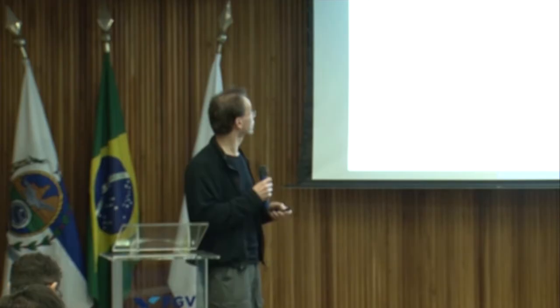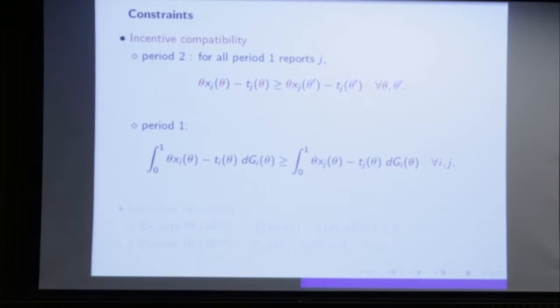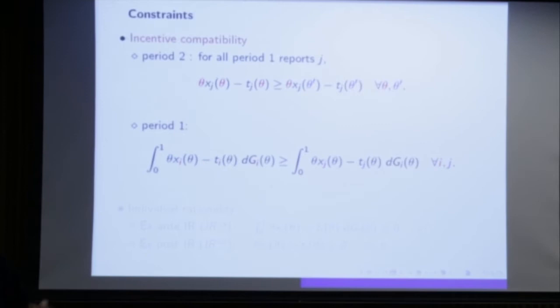Regarding incentive compatibility: the period-two constraints are standard — given that I already reported some type J, I will report theta truthfully. For period-one incentive compatibility about type I, given the non-shifting support, we also have truth-telling off the equilibrium path. The incentive constraint is quite simple: I can assume I will report theta honestly later. That is not without loss of generality — it follows from the period-two constraints. So the first-period incentive constraint holds on and off the equilibrium path.